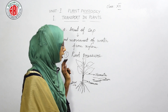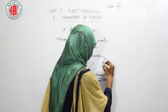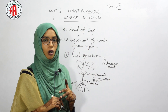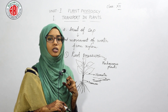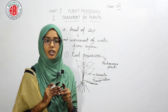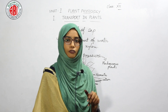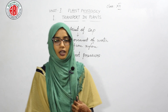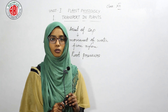Root pressure enables pumping or pushing water up to a certain height. Therefore, root pressure helps to transport water in herbaceous plants. However, in big or tall trees, root pressure cannot transport water to the longer distance or to the tip of the tree. Root pressure only helps carry water to a certain height, a few centimeters in the plant body.